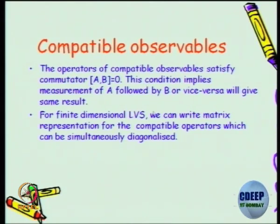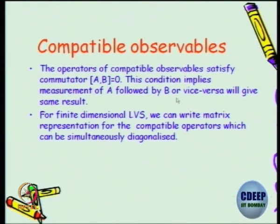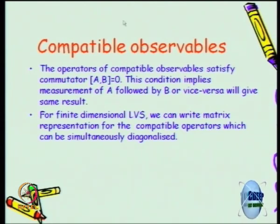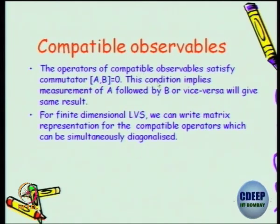The earlier statement was: if you do two consecutive measurements — A followed by B — the final result will be the same as doing B followed by A. The order does not matter. The second statement is that commuting operators in a finite dimensional vector space — not just 2-dimensional, even n×n matrices — can be simultaneously diagonalized by the same similarity matrix. This means the eigenbasis of A and the eigenbasis of B will be one and the same.